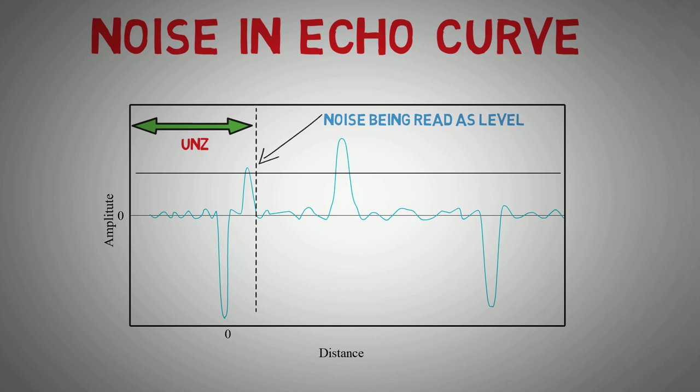If you see a similar echo curve with noise near the top of the probe in a transmitter that has previously been healthy, then it's not always caused by the vessel. This can be caused by product condensation building up at the top of the probe, causing the unwanted reflections and false level readings. I've seen this in gas condensate systems where the reading will suddenly shoot up to 100% level.